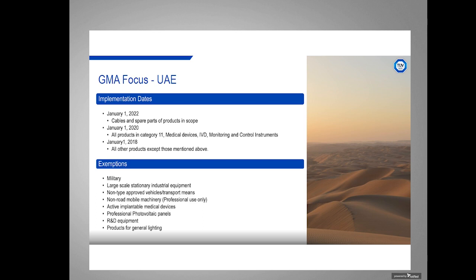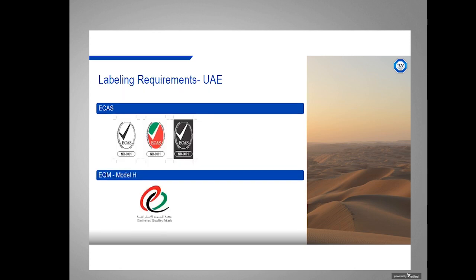Exemptions include military large-scale stationary industrial equipment, vehicles, non-road mobile machinery, active implantable medical devices, photovoltaic panels, R&D equipment, and general lighting products — the same exemptions as the European regulation. The labeling requirements: the ECAS approval mark can use any contrast color on your product label, and the EQM mark is for voluntary certification — the Emirates quality mark is placed on the product.